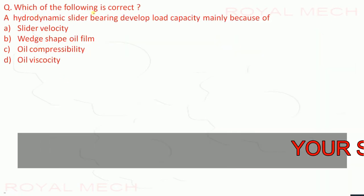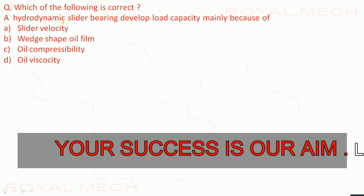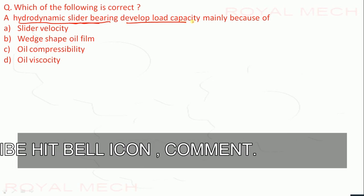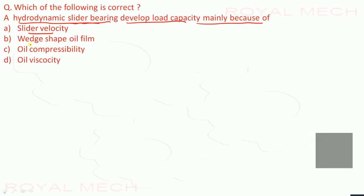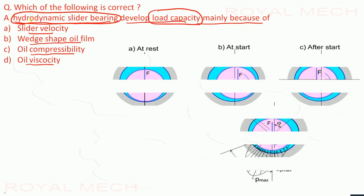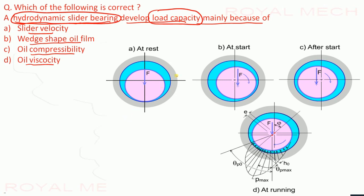Which of the following is correct? A hydrodynamic slider bearing, that is a journal bearing, develops load capacity mainly because of slider velocity, wedge-shaped oil film, oil compressibility, or oil viscosity. The hydrodynamic bearing develops load capacity due to the wedge-shaped oil film — option B is the correct option.